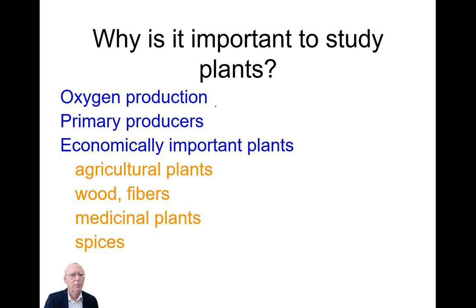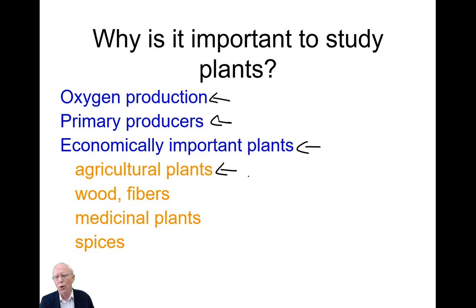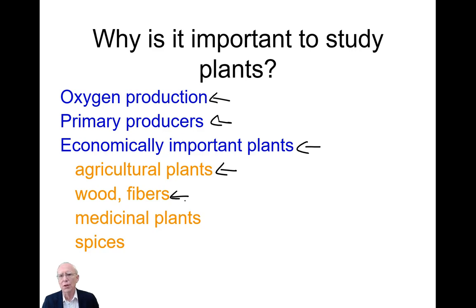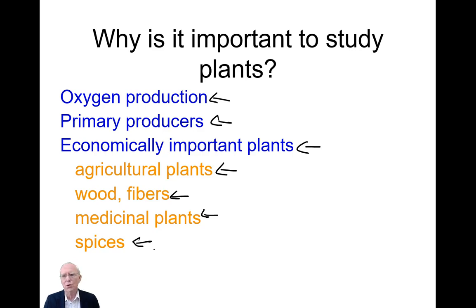So why is it important to study plants? They produce oxygen — they're the primary producers and all life on Earth depends on them. They are economically important: everything we eat is either from a plant or has eaten a plant. There's wood, fibers, medicinal plants — many of our drugs are initially derived from medicinal plants — and culinary spices, all kinds of important reasons including maintaining life on Earth.